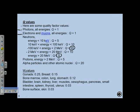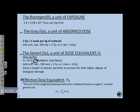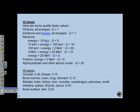Protons with energy greater than 2 MeV have Q=5. Alpha particles and other atomic nuclei also have Q=20. Protons at facilities like a proton center are around 130 MeV, so their Q=5. The effective dose equivalent H_E equals the dose equivalent times the tissue weighting factor W_T. Gonads have the largest weighting factor because irradiation there affects genetics and can propagate through multiple generations.